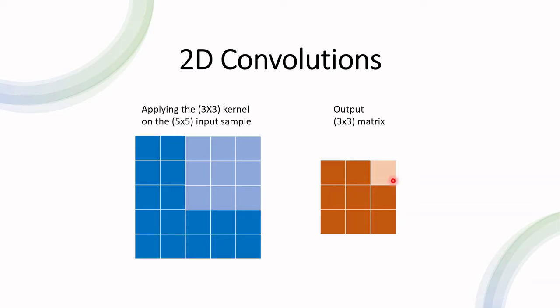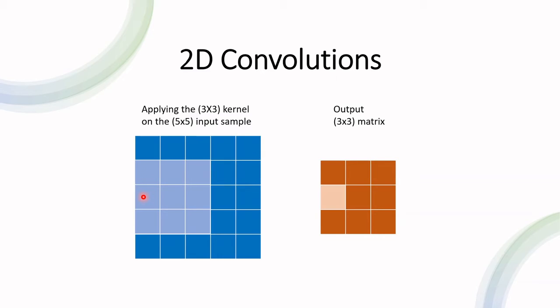When we finish with the first row, the kernel is set back to where it began and strided down one pixel, and so on. That's generally how a convolution is applied.